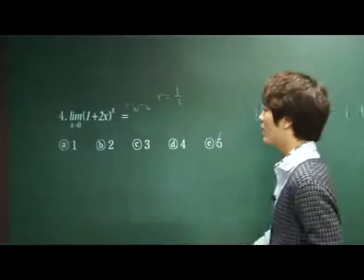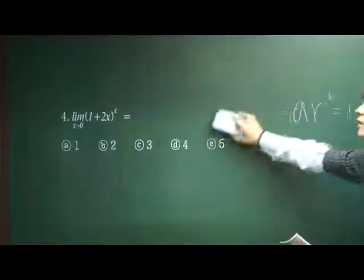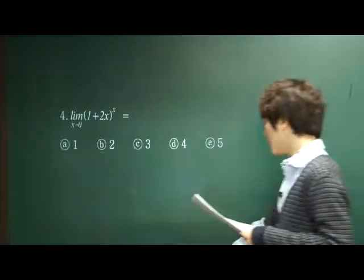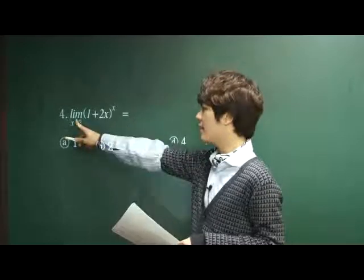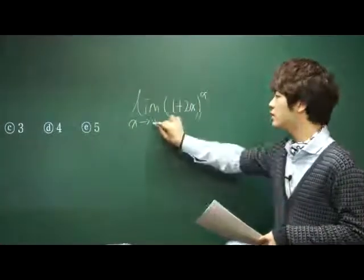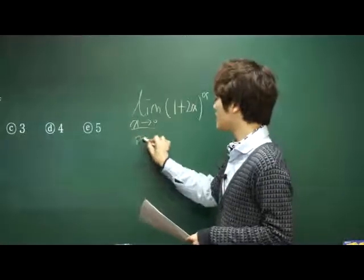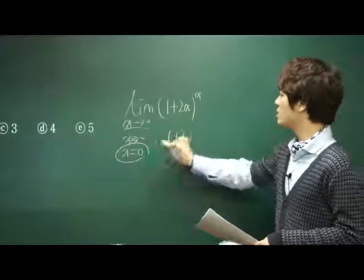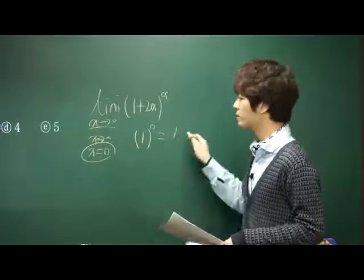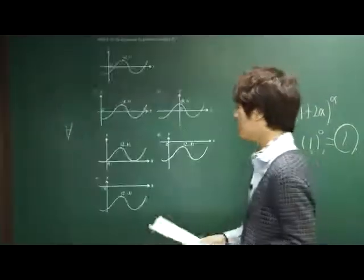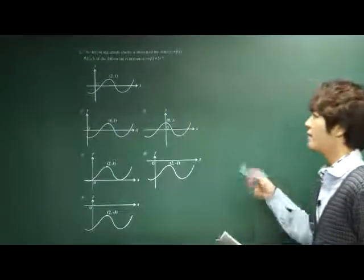Number 4: as x approaches zero, the limit of (1 plus 2x) to the x power. You shouldn't be afraid, even though there is a limit here — it's not a complicated question at all. When x reaches zero, it is infinitely close to zero, so you can just assume x equals zero. That gives 1 to the zero power, which is 1. The answer is A, 1. Questions between 1 and 15 are probably the easiest on the SAT-2 test, so you shouldn't be afraid of them.